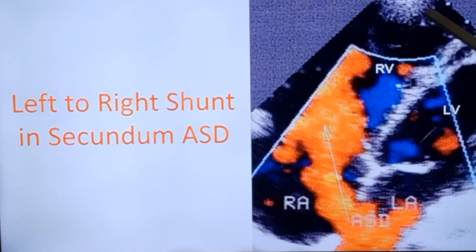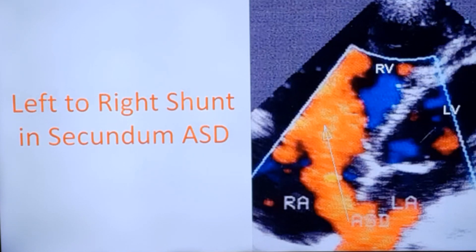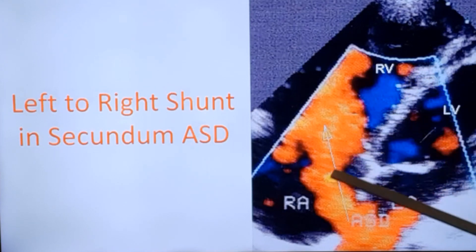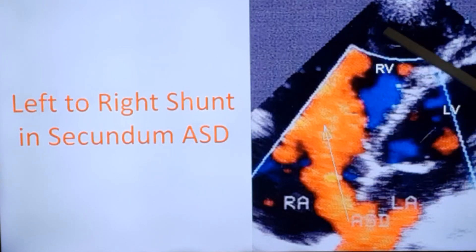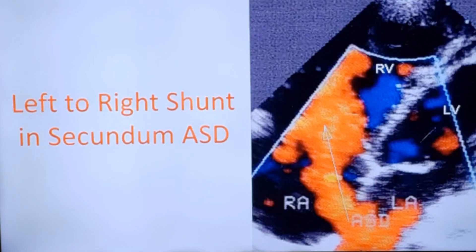It is a slightly tilted apical four-chamber view with the apex slightly towards the left. Left ventricle, right ventricle, right atrium, left atrium — the ASD is seen here. This is the left-to-right shunt across the atrial septal defect, seen by color Doppler echocardiogram.